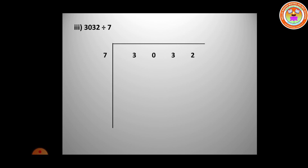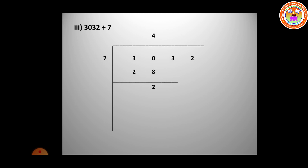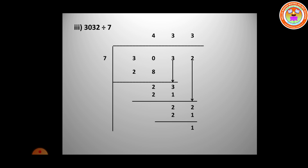The next question is 3032 divided by 7. The dividend is 3,032 and the divisor is 7. Since 3 is less than 7, take 30 together. Four 7's are 28, remainder 2. Bring down — it becomes 23. Three 7's are 21, remainder 2. Bring down — it becomes 22. Three 7's are 21, remainder 1. The quotient is 433 and the remainder is 1.